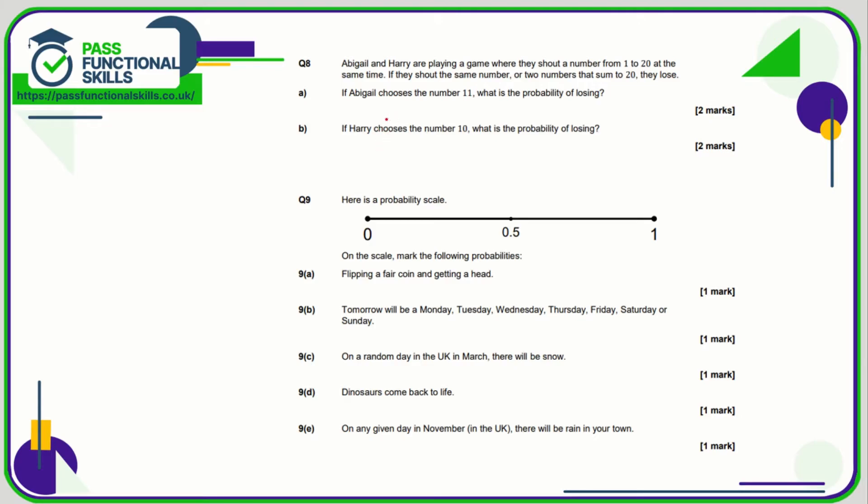Question number eight: Abigail and Harry are playing a game where they shout a number from 1 to 20 at the same time, and if they shout the same number or two numbers that sum to 20 they lose.